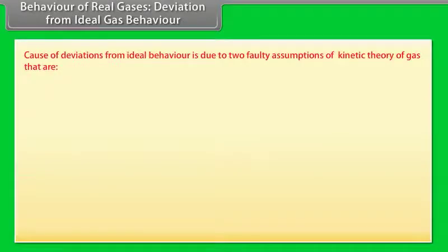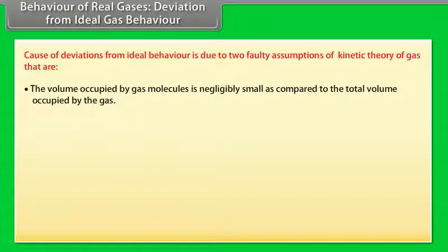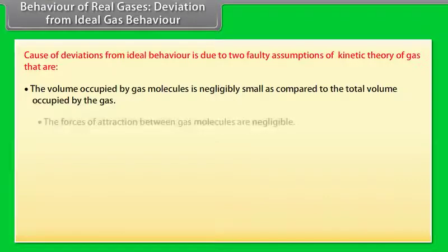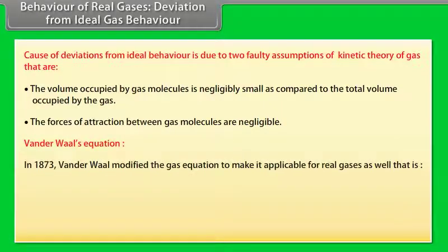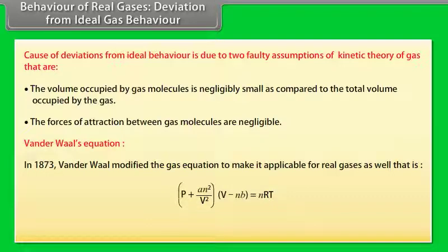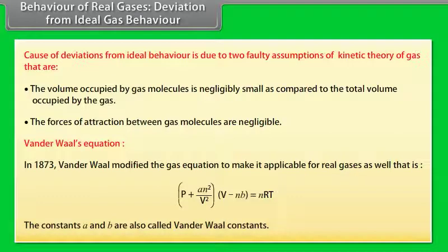The cause of deviations from ideal behavior is due to two faulty assumptions of kinetic theory: first, that the volume occupied by gas molecules is negligibly small compared to the total volume; second, that the forces of attraction between gas molecules are negligible. Van der Waals equation (1873) modified the gas equation for real gases: (P + AN²/V²)(V − NB) = NRT, where A and B are Van der Waals constants.